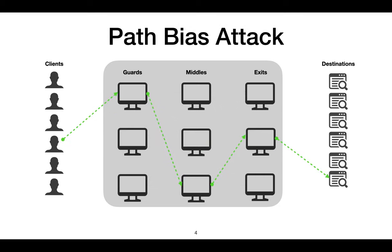In this scenario, what is a path bias attack? In green, we see an example circuit formed under normal operation of Tor. Now suppose that an adversary has compromised some guard and exit relays, shown in red. It is bad for the client if their circuit passes through both a compromised guard and a compromised exit relay.